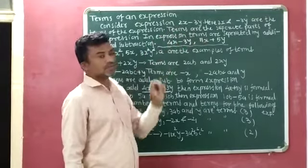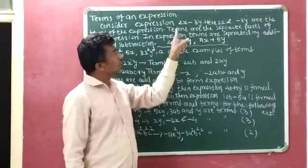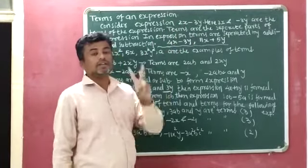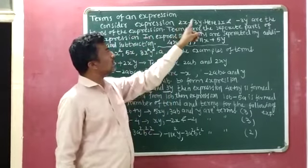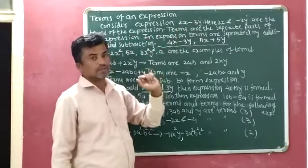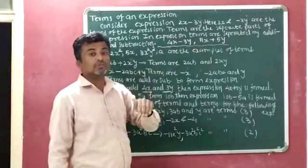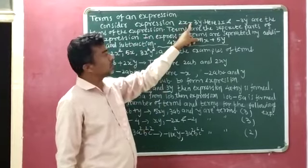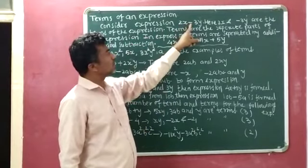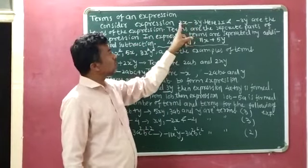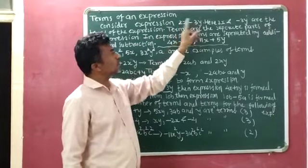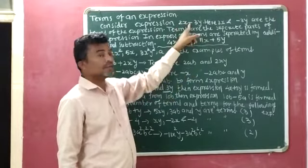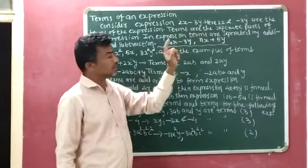See here, 2x minus 3y. In 2x minus 3y, there are two terms: 2x and minus 3y. Both terms are separated by subtraction — the minus sign is present. So in 2x minus 3y, both terms are separated by subtraction.